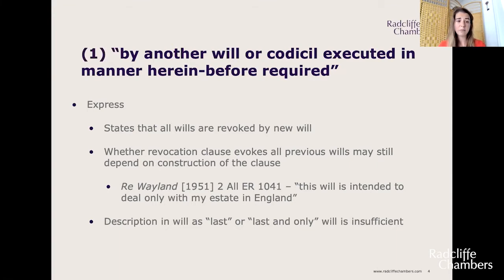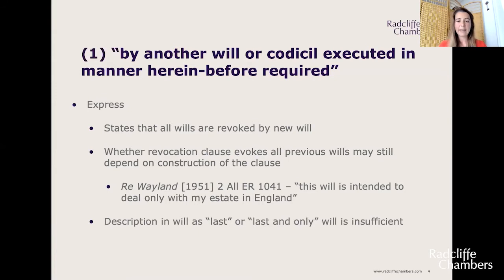In the case of Reweyland, a testator had made a Belgian will which dealt with his assets in Belgium. Subsequently he made a will in England with a revocation clause intended to revoke all former wills, but that English will specifically stated it was intended to deal only with the English assets and estate, so it did not on true construction revoke the Belgian will. It's important to know it's not sufficient to have a description such as 'my last and only will' without an express revocation clause — that description does not by itself operate to revoke a will.